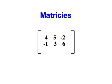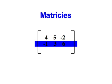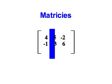A matrix is a way to organize numbers. It has rows and columns. This gives us our dimensions. In this example, this matrix is a 2 by 3 matrix because it has two rows and three columns.